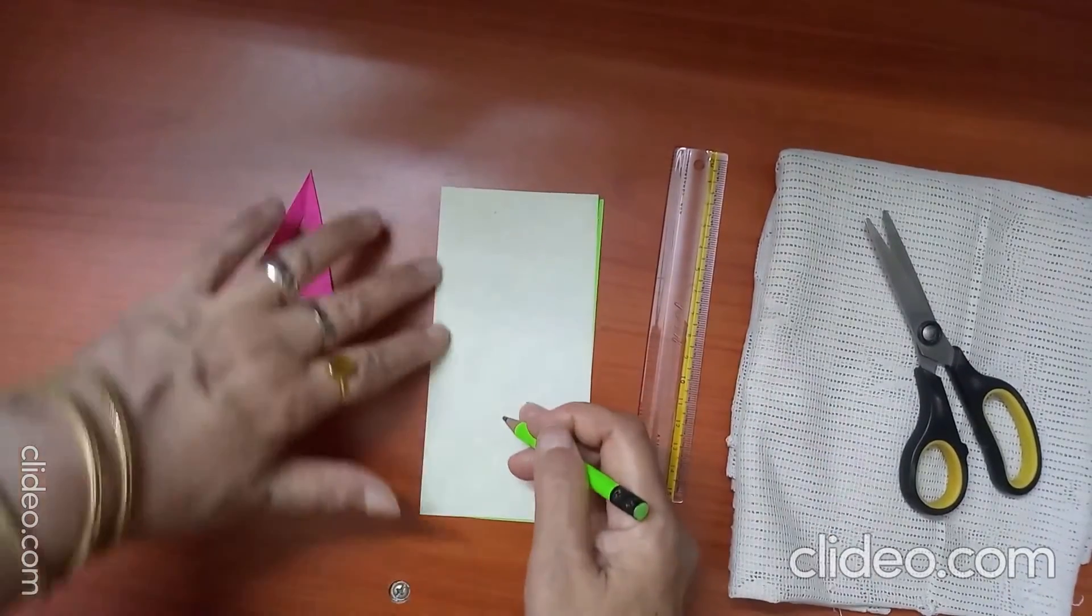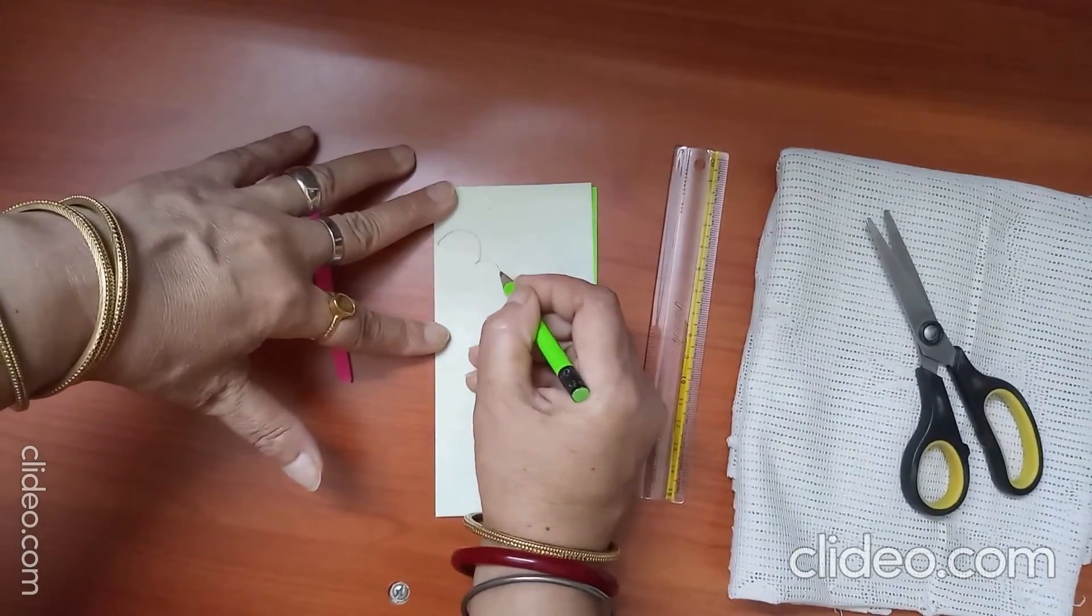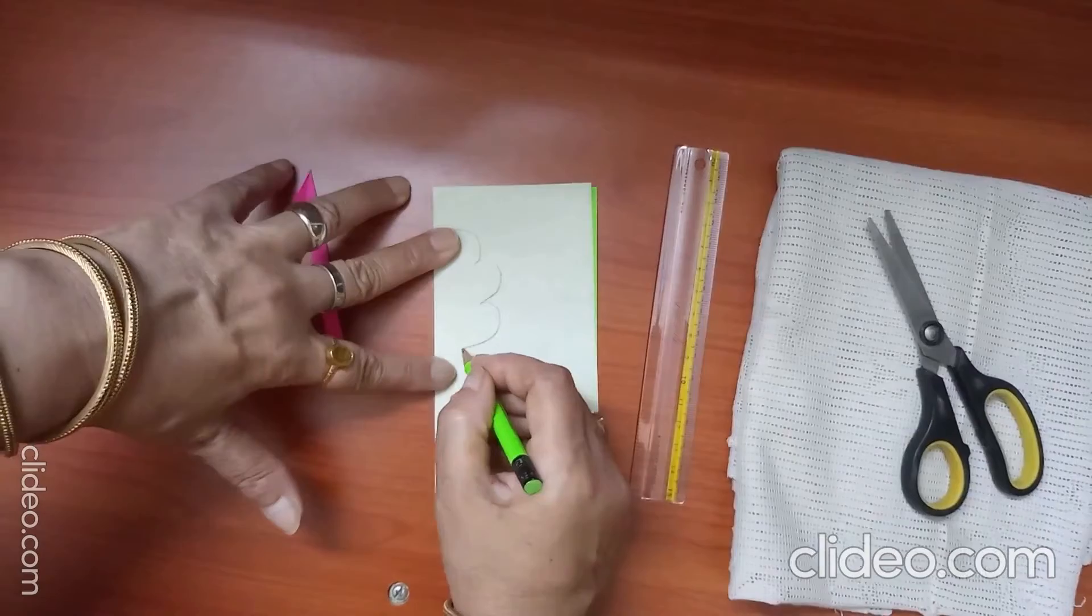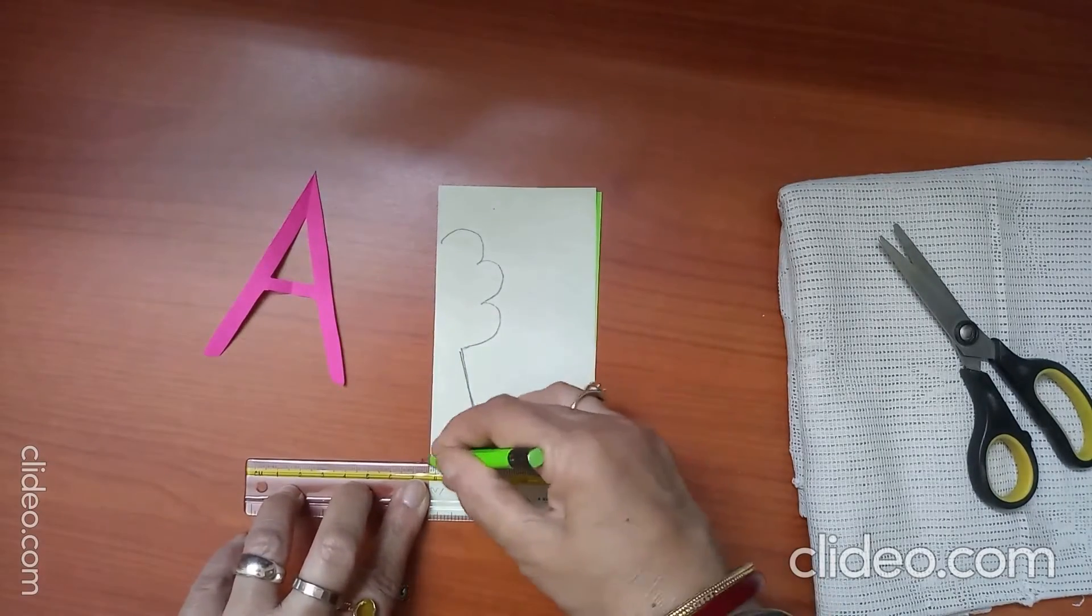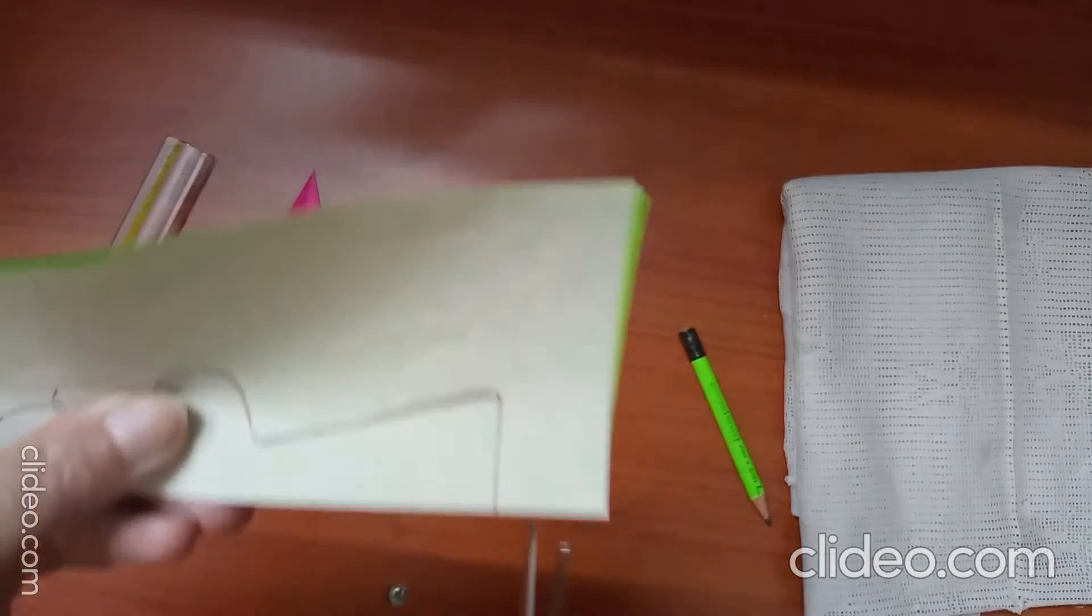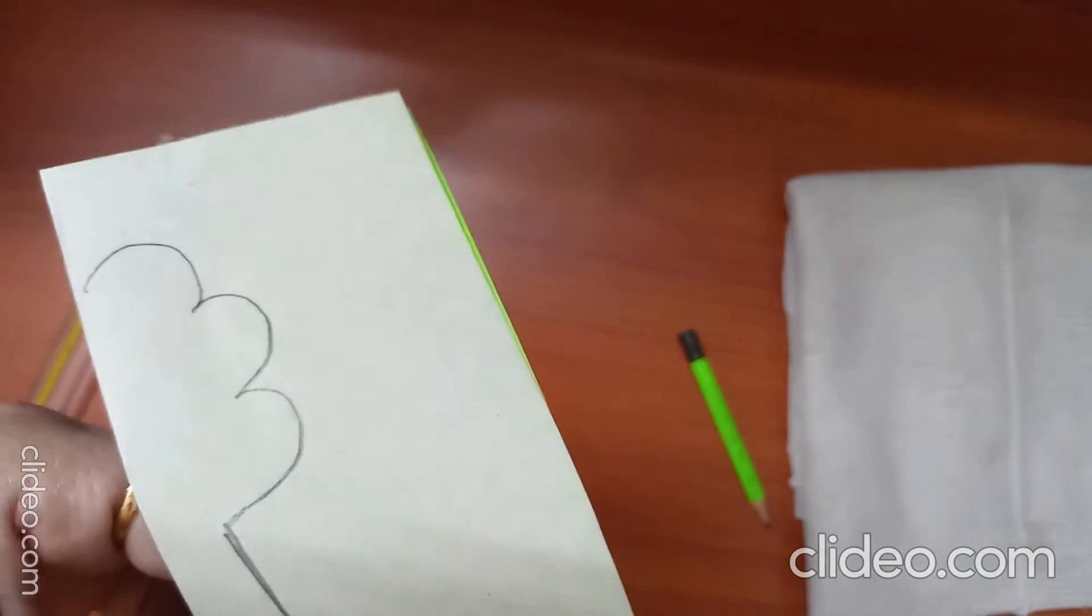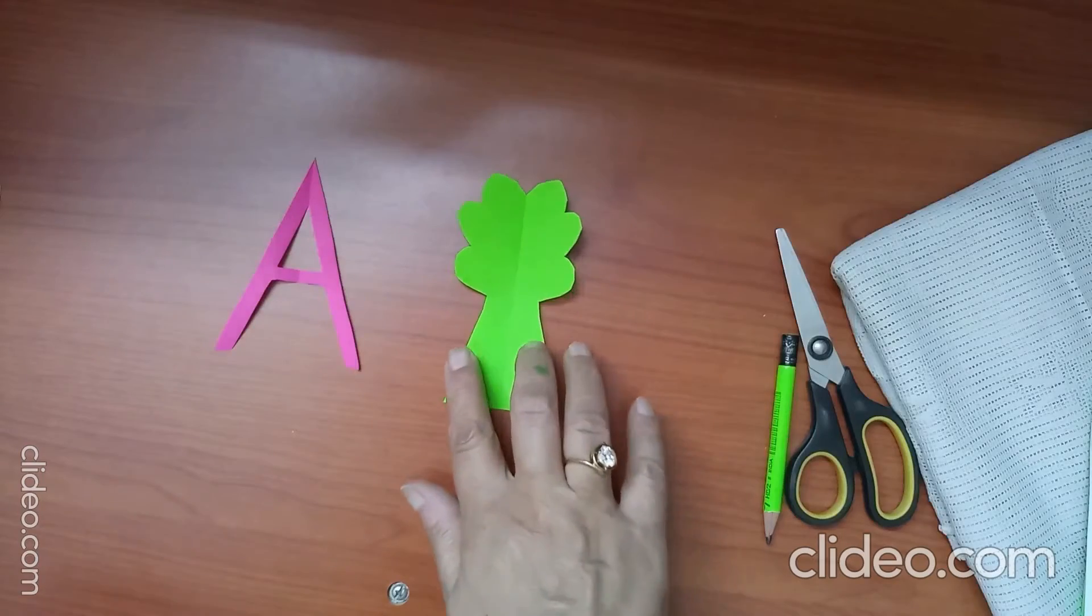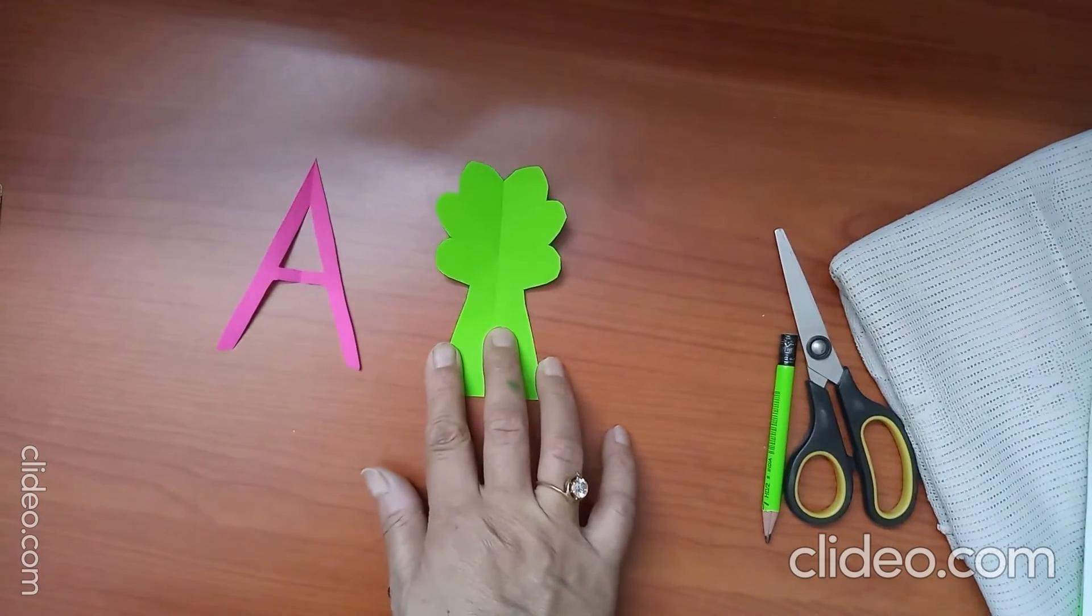Half tree on one side. Now cut it. Now what you have got, a tree which is symmetrical in shape.